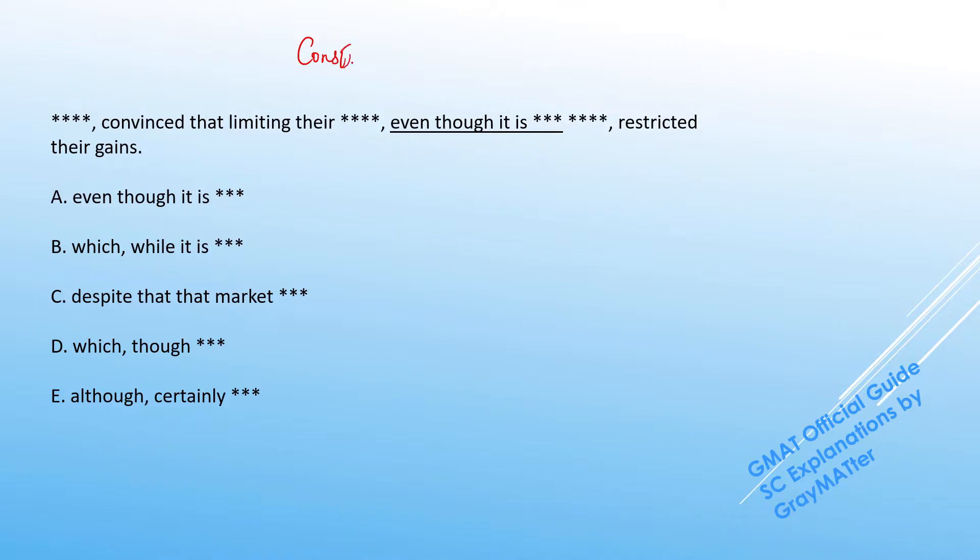This question exclusively requires a construction-based attack because when you scan through the answer choices you don't get a specific point of attack as such. So in questions like these, the only things that can be done is check for a logical-based attack or a construction-based attack. So let's look at how this sentence is constructed.